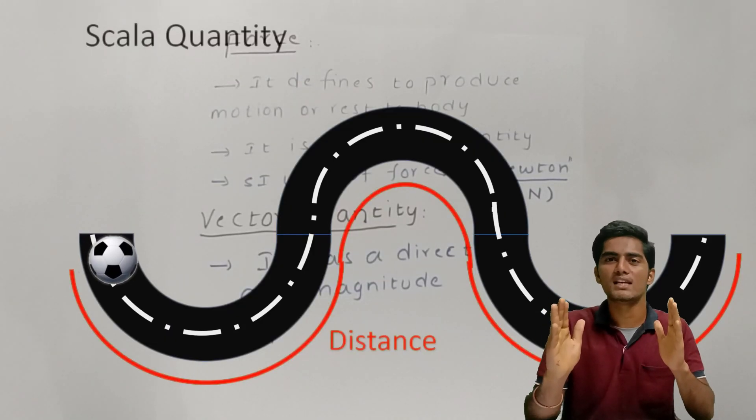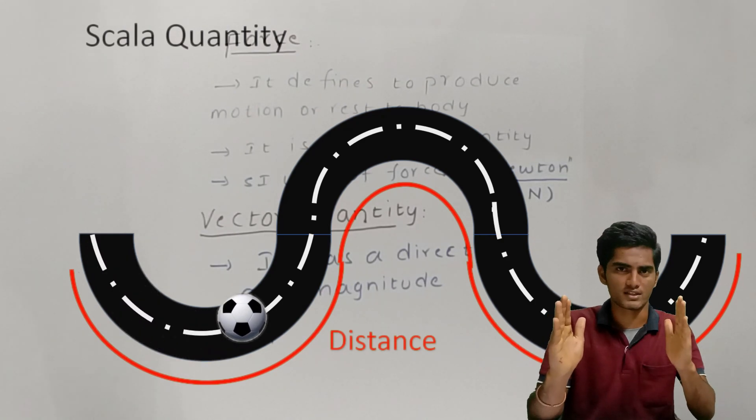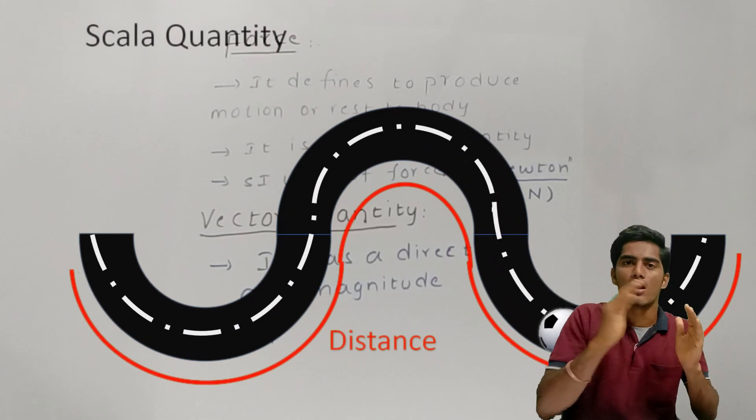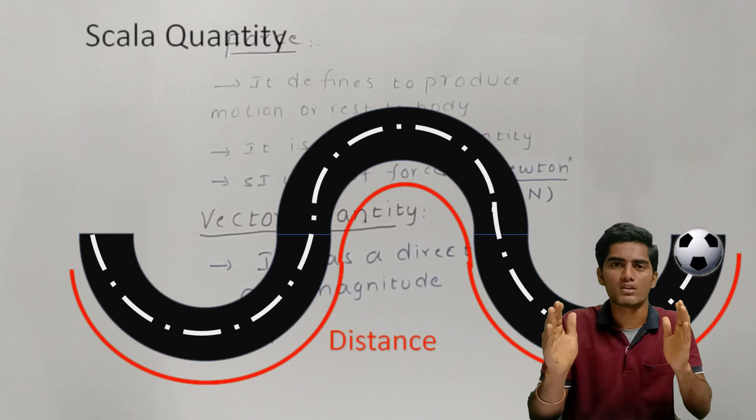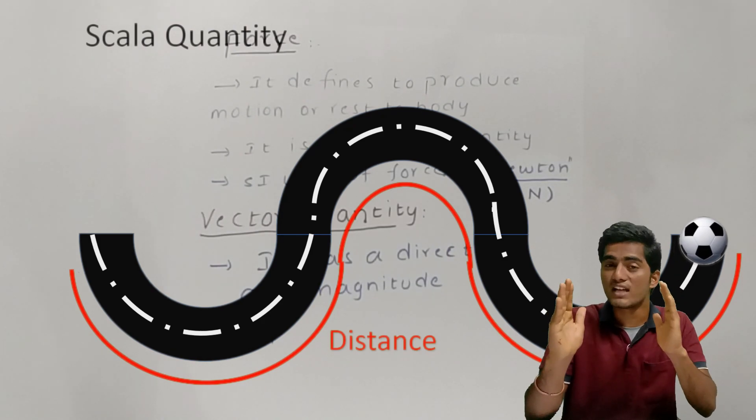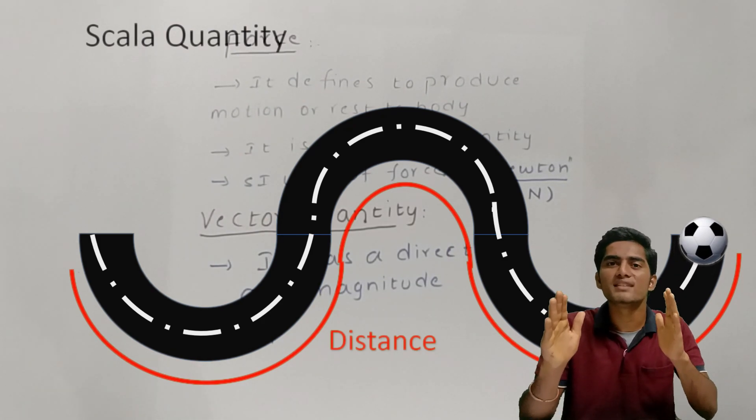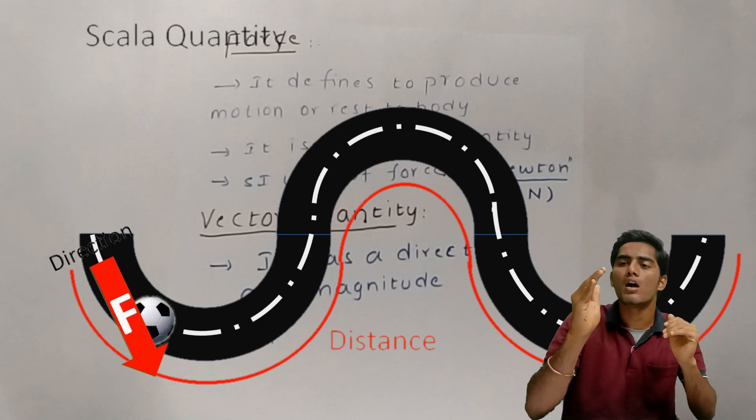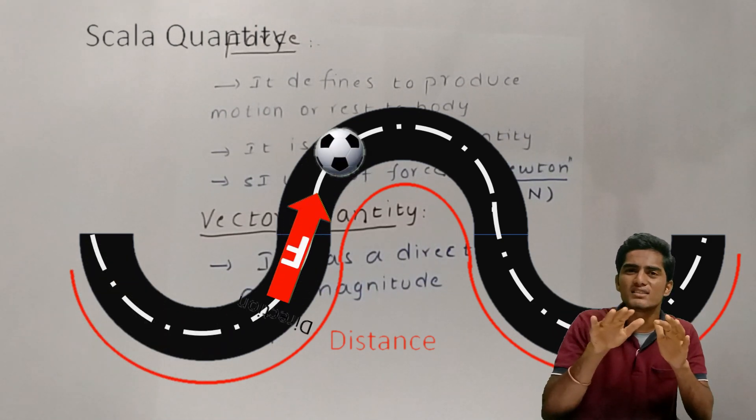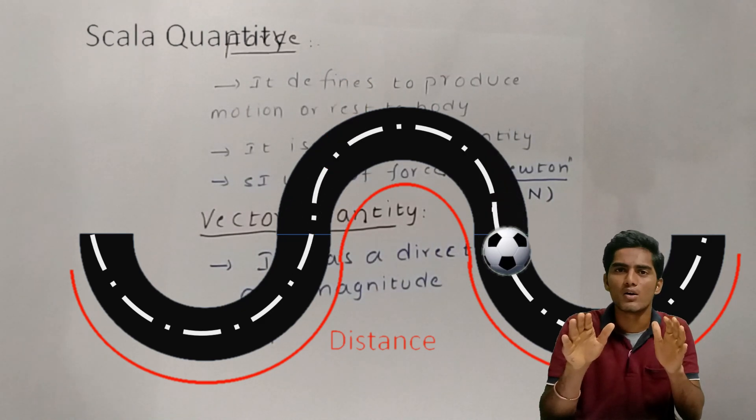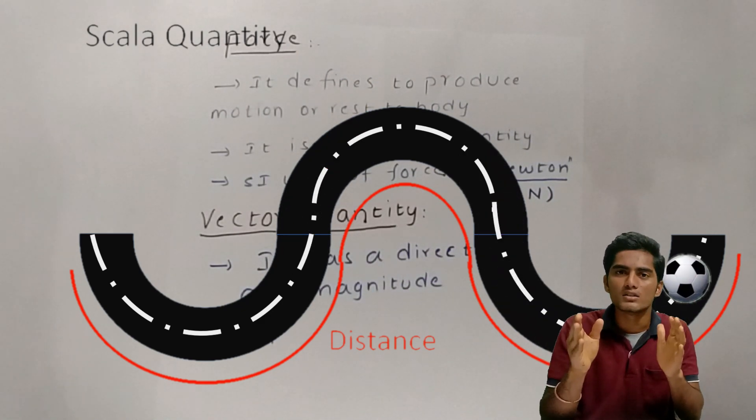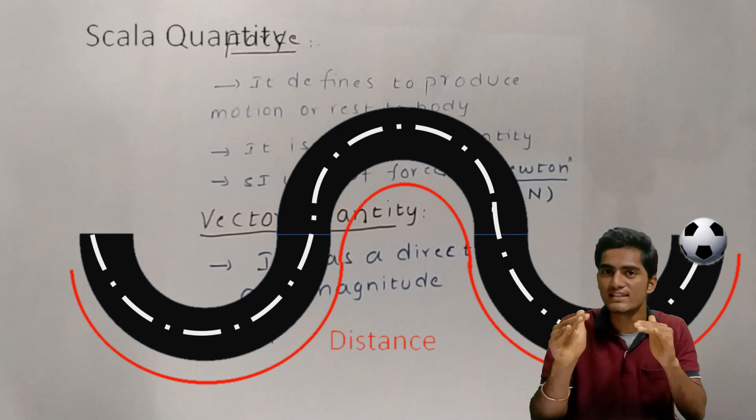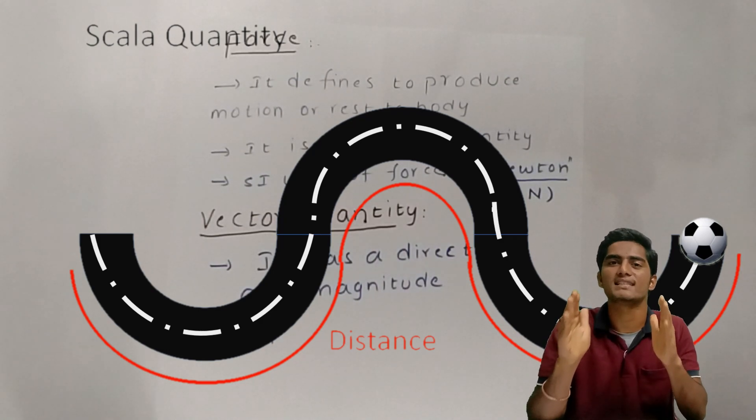For example, a body travels from right to the left in a zigzag way or curved way, longest path. Right to the left is not a direction because there is no proper direction to the body. If the body travels from up and down, the direction changes every period. That's why the body has no proper direction. That's why in this example body has a scalar quantity.